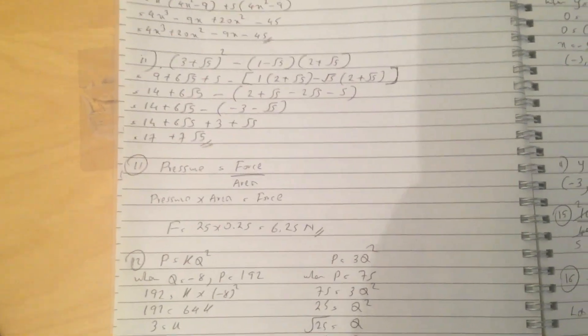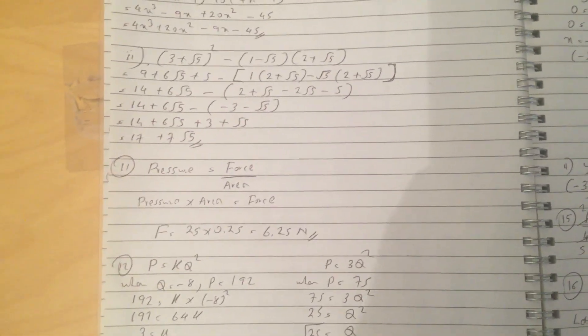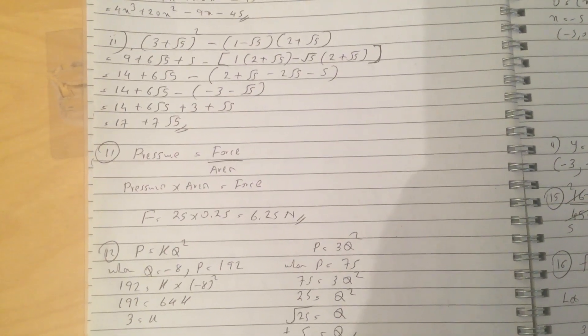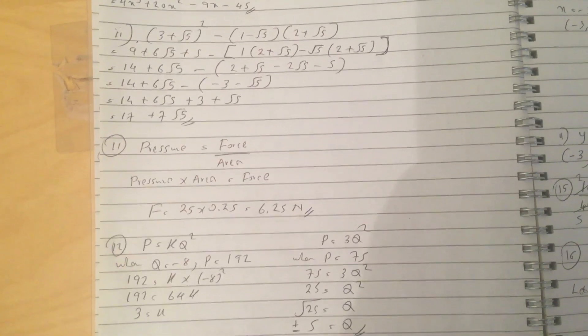So question 11 is a physics-based question. Pressure equals force over area, so pressure times area equals force. So force equals 25 times 0.25, which is 6.25 newtons.